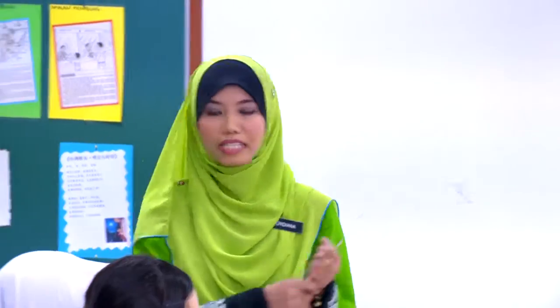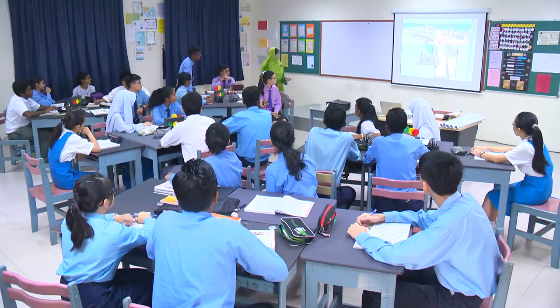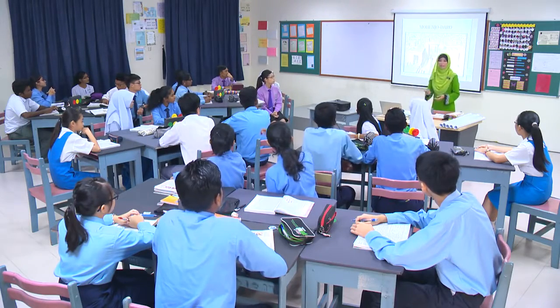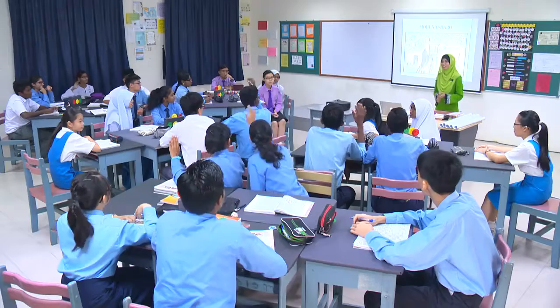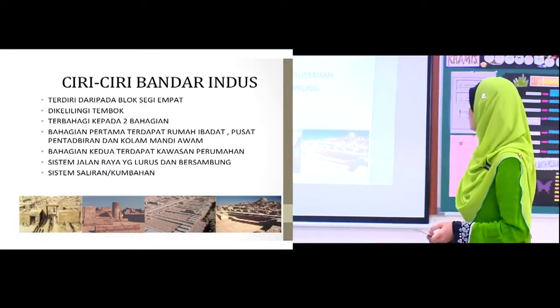Cuba kamu perhatikan betul-betul gambar ini. Daripada gambar ini, apa yang dapat kamu saksikan? Ya, silakan, Nava. Apa yang saya dapat perhatikan ialah bandar Harappa dan bandar Mohenjo-Daro diperbuat daripada batu-bata. Ya, betul. Tahniah. Bandar Mohenjo-Daro dibina daripada blok-blok batu-bata yang sama saiz dan sama besar. Selain itu, ada sesiapa boleh kongsikan apa yang kamu lihat? Ya, silakan, Vashili. Saya dapat lihat bandar ini tersusun dan kemas, Cikgu. Ya, betul. Bandar Tamadun Indus memang sangat tersusun dan kemas. Sebenarnya terdapat banyak lagi ciri-ciri bandar Indus yang perlu kamu ketahui.